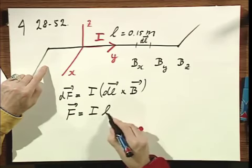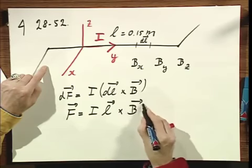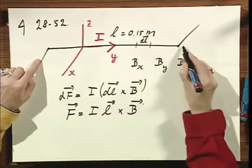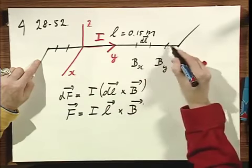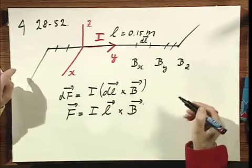So I can take the wire as a whole. I don't have to worry about that the angle here is different from the angle here between dl and between B. So that's why this simple result holds.